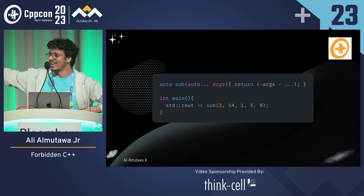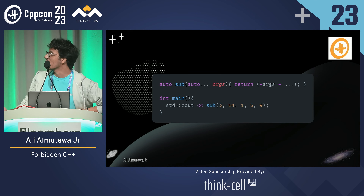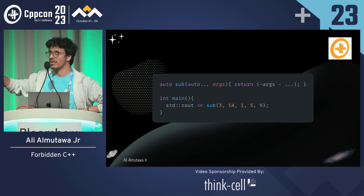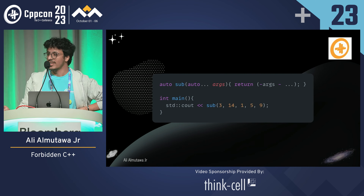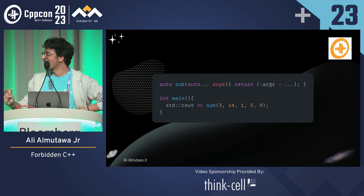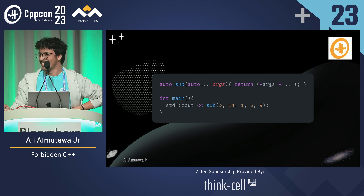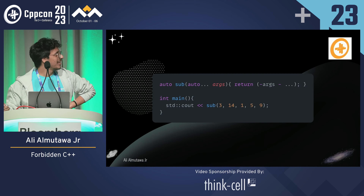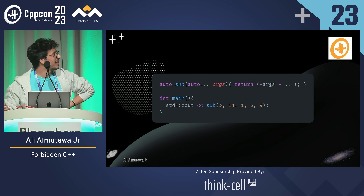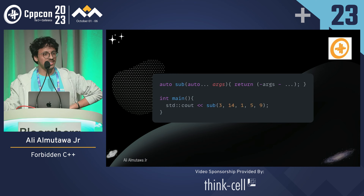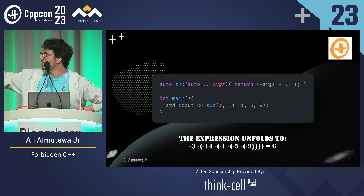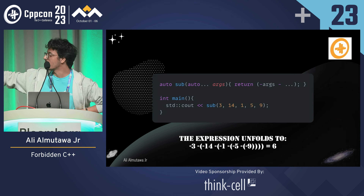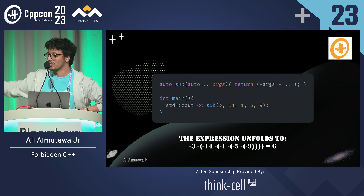I have a function that takes in a bunch of arguments and I'm doing a fold expression. Does this compile? This does compile and it unfolds to negative 3 minus negative 14 minus negative 1, and it equals 6.